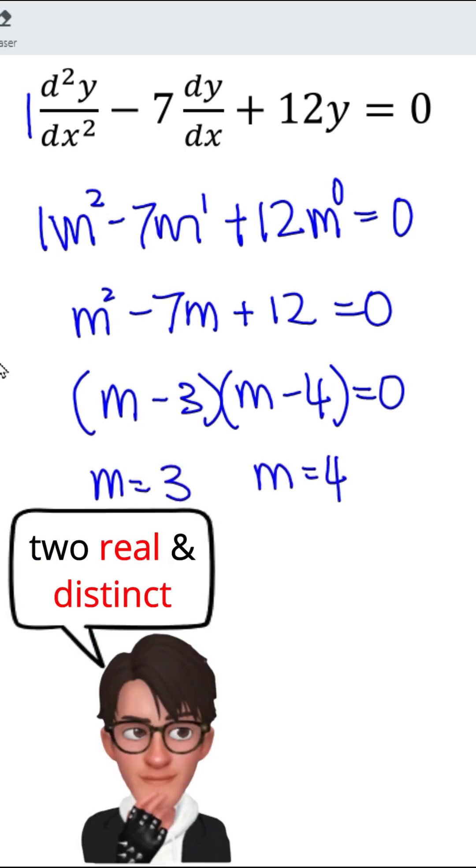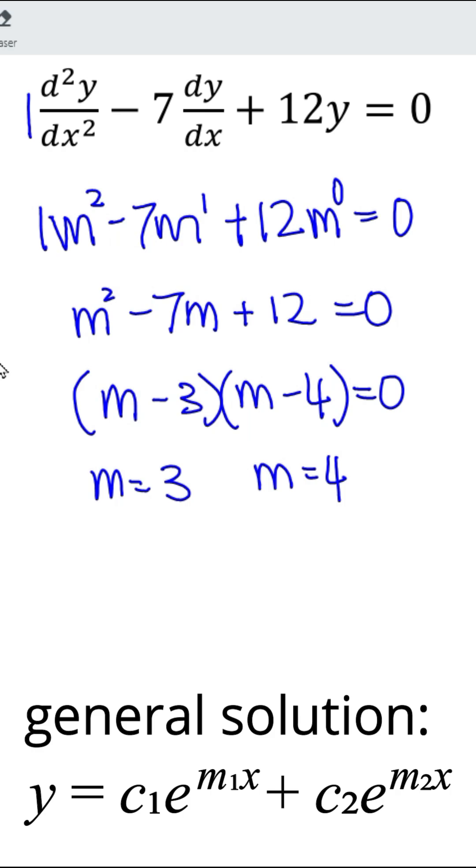With two distinct roots, the solution to this differential equation is y equals c1 e to the 3x plus c2 e to the 4x, and hence with that, we'll see you next time.